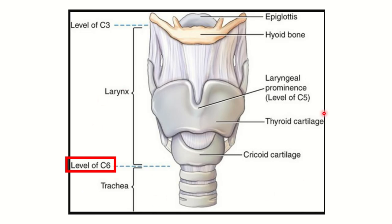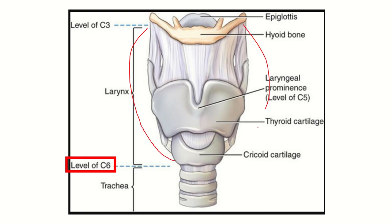Here we can see the trachea, larynx, and other parts. The upper part is the hyoid bone, and behind the hyoid bone is the epiglottis. Below that is the thyrohyoid membrane. This entire region — from here to here — is the larynx. We can see the different parts of the larynx, including the laryngeal cartilage, or thyroid cartilage.